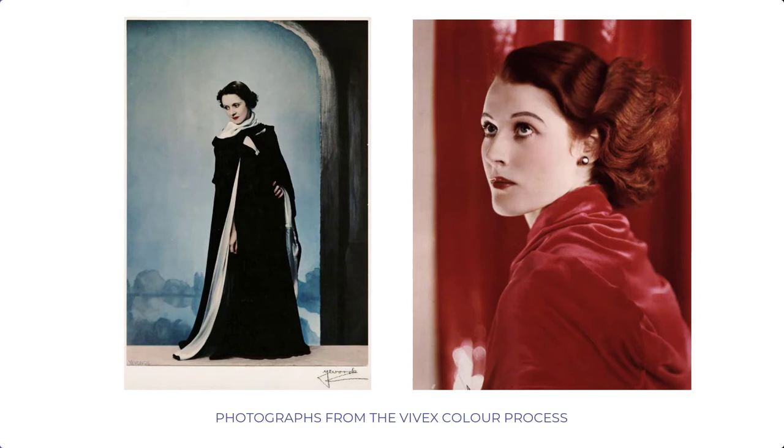Nick got interested in the Vivex process after seeing photos in an exhibition by a photographer called Madame Yevonde, a society photographer. The color prints from the 1920s and 30s were of fantastic quality — beautiful to look at. But once again it required one big camera with three black and white plates taking three photos simultaneously through three lenses with different color filters. If a person moved between the shots, you couldn't merge the plates — so you could photograph still lives but not people easily.